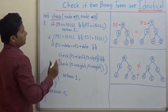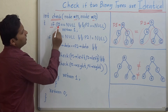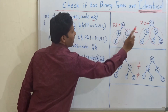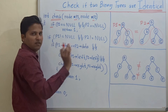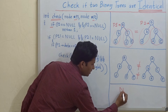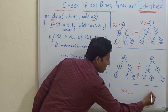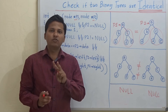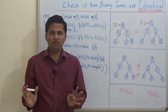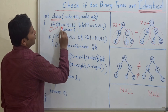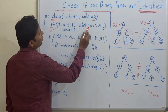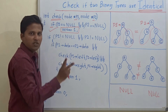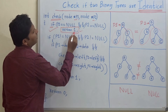The first if condition is: if p1 == null and p2 == null, which means both trees or subtrees are null. For example, if the first is a null tree and the second is also a null tree, then obviously two null trees are identical. So because p1 == null and p2 == null, we return 1, because two null subtrees are always identical. Returning 1 means true.